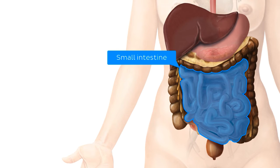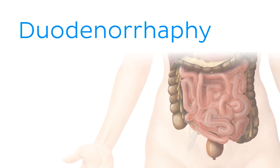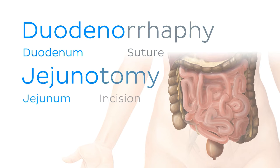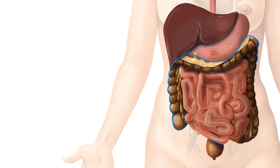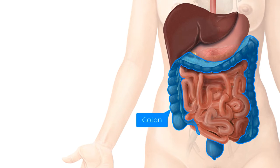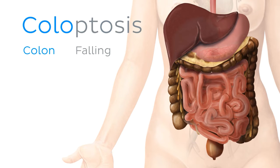As we move on to the small intestine, we can see that each of its parts lend themselves as roots for more complex terms. For example, duodenorrhaphy, jejunotomy, ileopexy — easy peasy, right? Similarly, the large intestine, also known as the colon, uses the root words 'colo', 'colono', or 'colonic' when describing structures, procedures, and disorders associated with this region. For instance, coloptosis describes the prolapse or downward displacement of the colon.